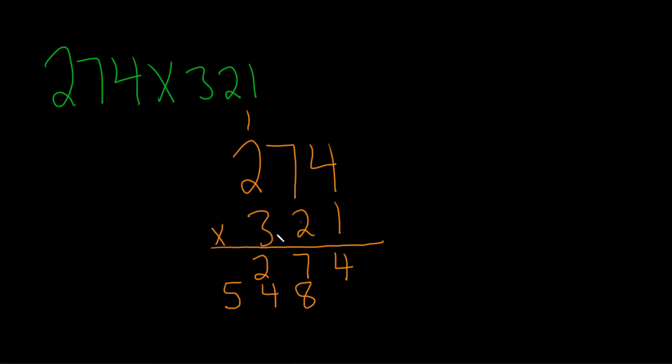Then we go to the next one, which is 3. 3 times 4 is 12, so I'll write the 2 here. Notice it's below the 3. I'm going to erase this one because it's confusing. So 3 times 4 is 12, carry the 1.